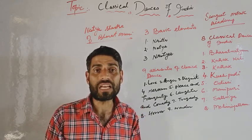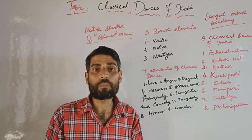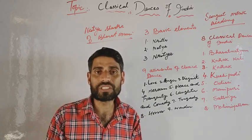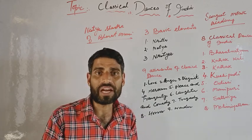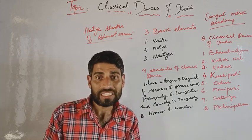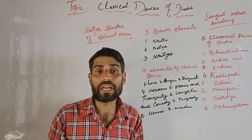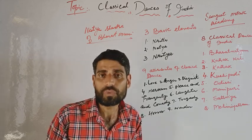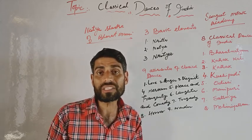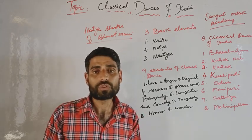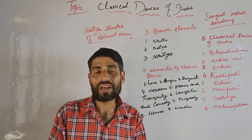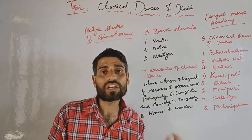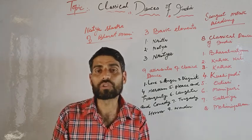Nritya refers to the sentiments and emotions evoked through dance. There are nine rasas, or attributes, of classical dance in India, as mentioned in the Natya Shastra of Bharat Muni.